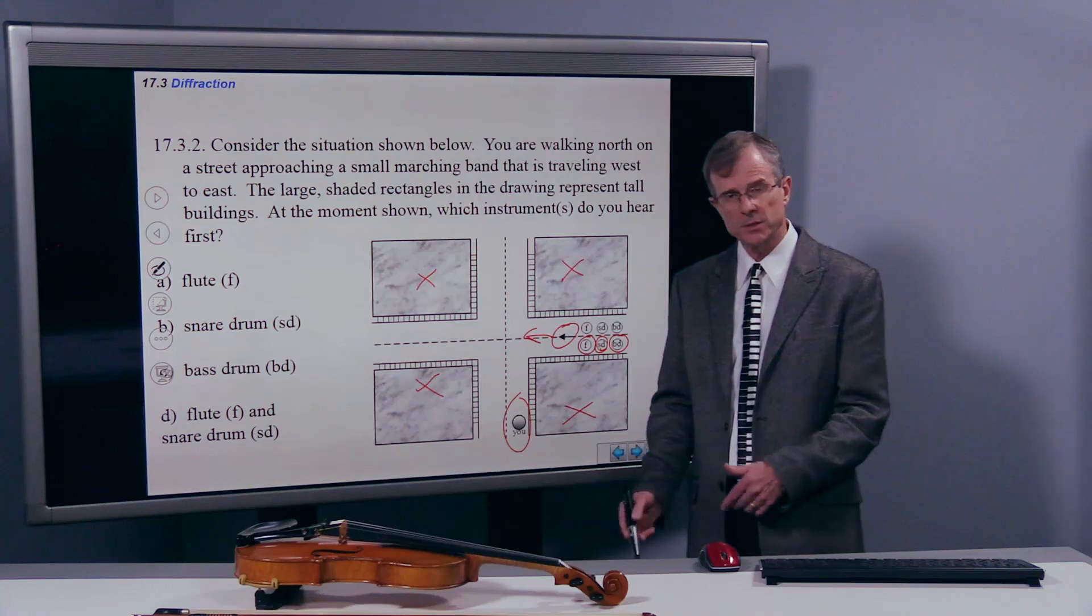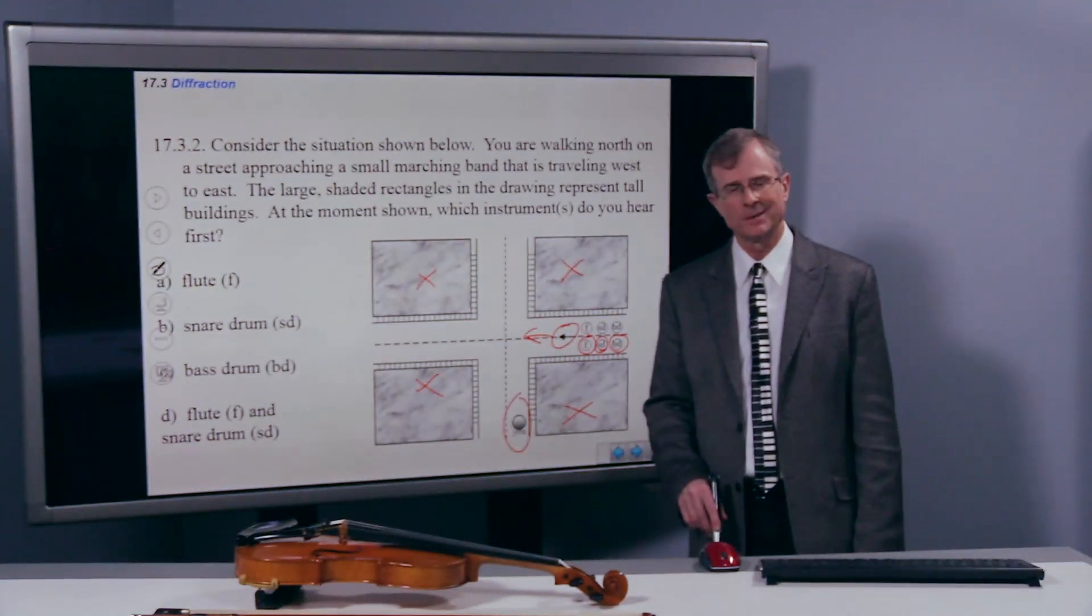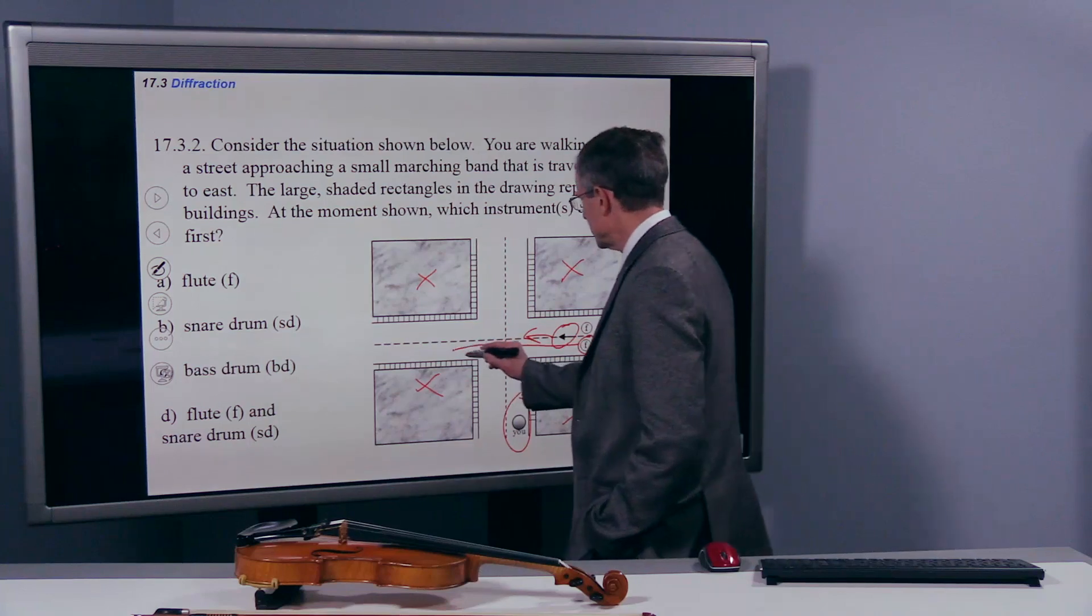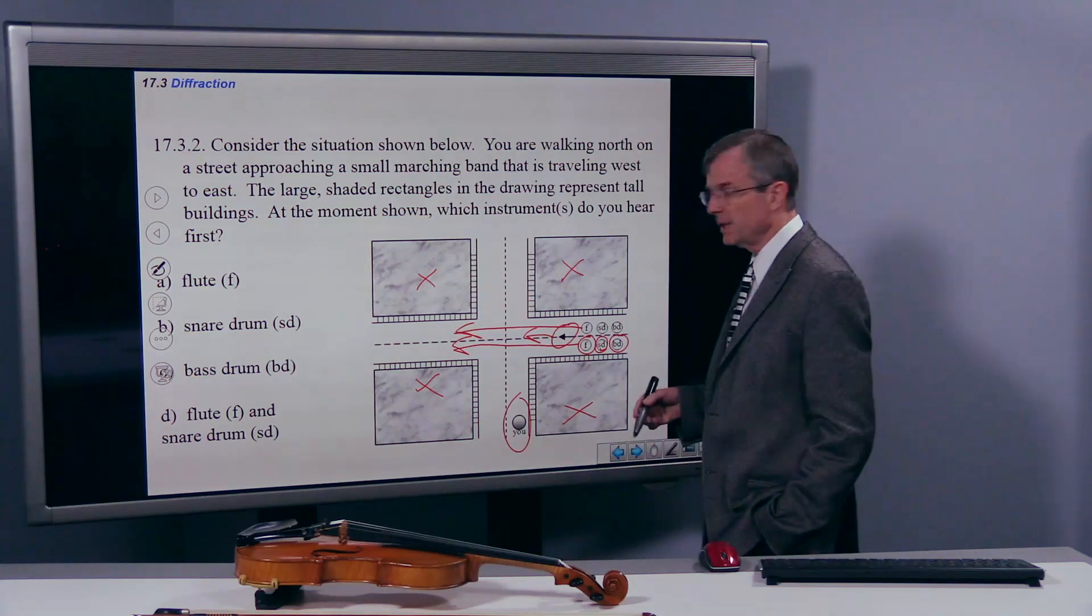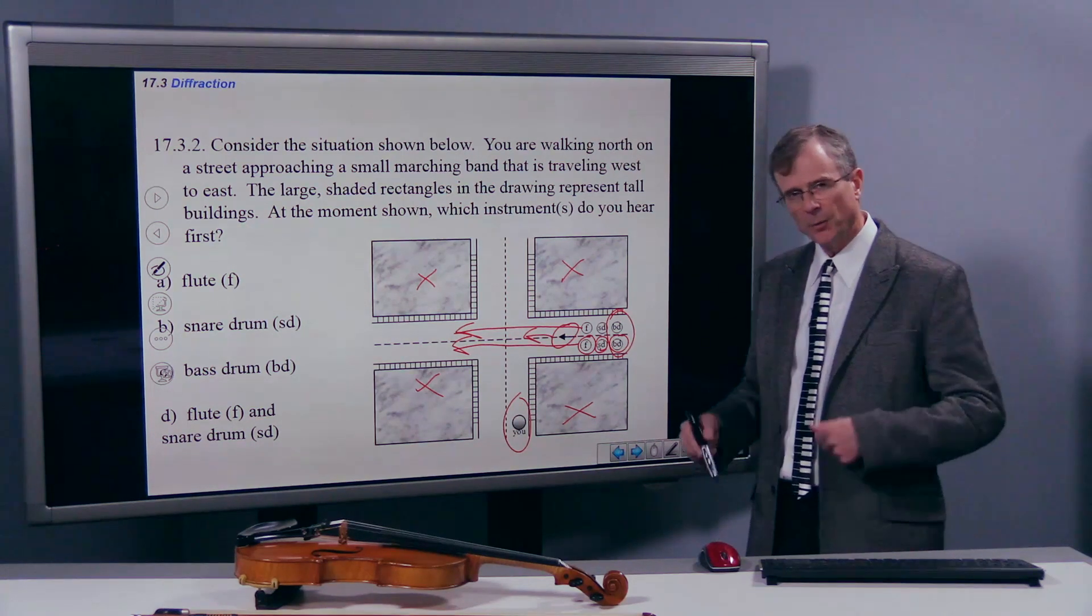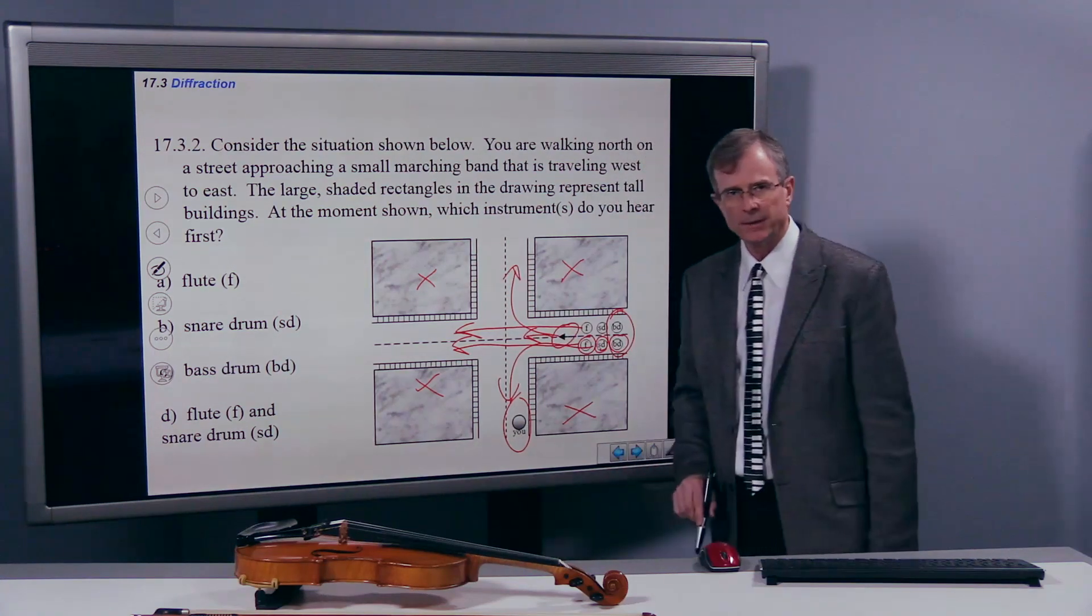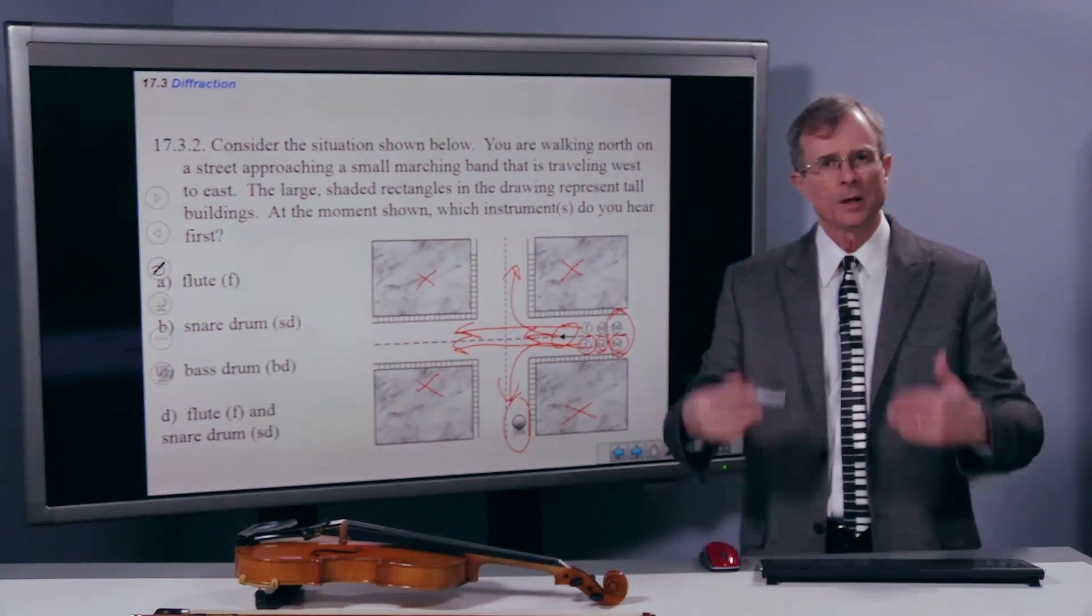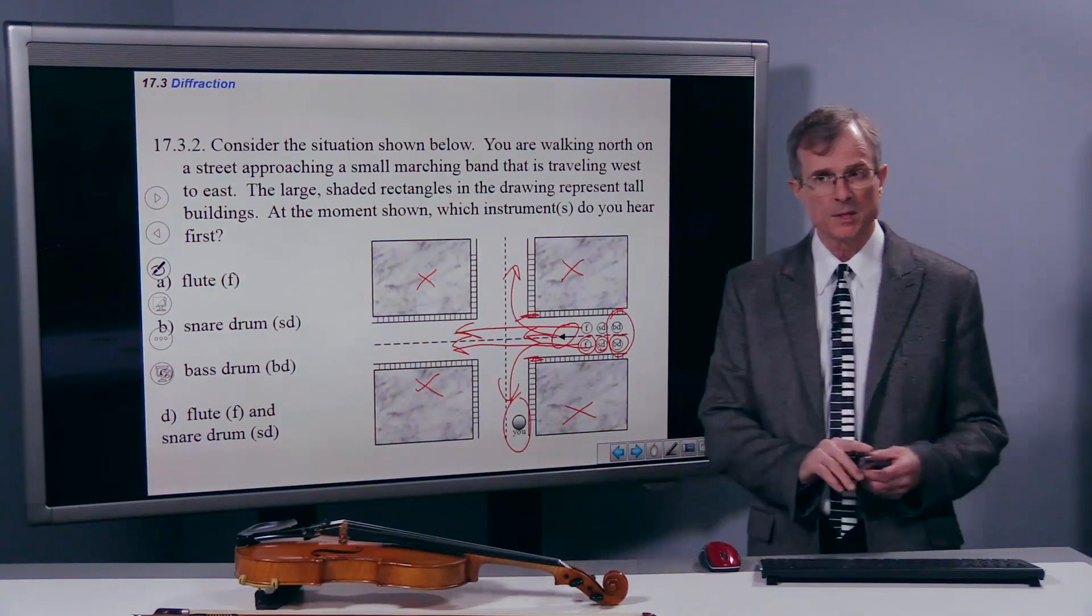Well, you say, the flutes are closest, I'm going to hear them first. And then you go, well, wait a second. I know something about diffraction now. And the flute's sound is not very directional. It's high. So that flute's sound is not going to diffract very much. It's just going to go mostly straight through. The first thing, in fact, that you're going to hear from that marching band are those bass drums. They're very low frequencies. They're able to bend around the corners a lot better. Low frequency, long wavelength. A wavelength that's long compared with the size of the opening here, or at least comparable to the size of the opening.